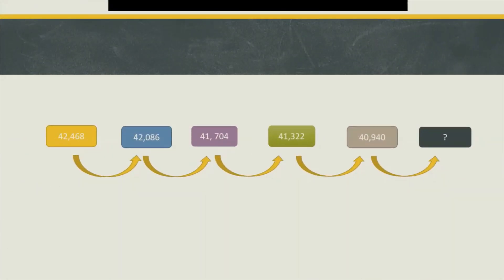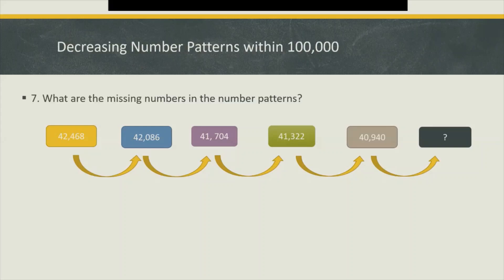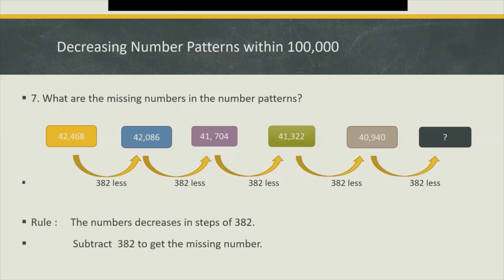Now let's go on to the last example for today. What are the missing numbers in the number pattern? Three hundred and eighty-two less, isn't it? That means subtract three hundred and eighty-two to get the missing number, and the missing number is forty thousand five hundred and fifty-eight.